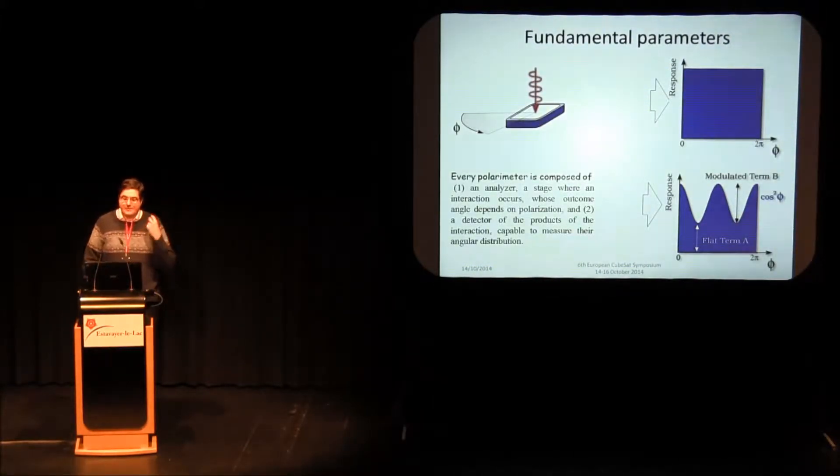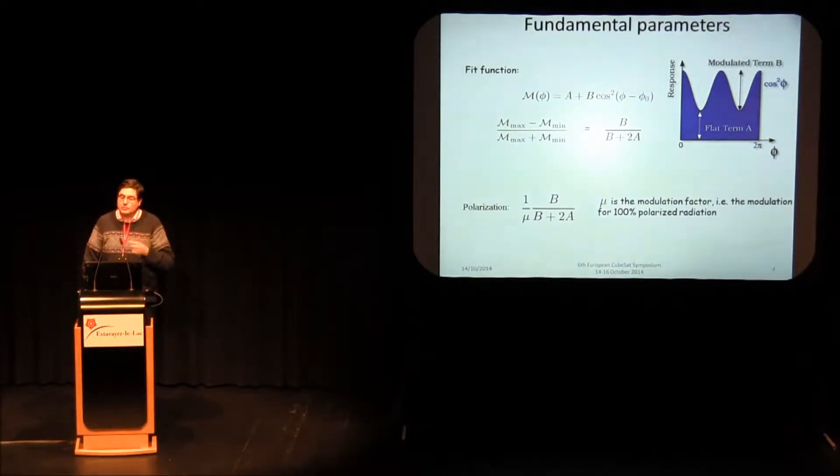X-ray polarimetry consists usually of an analyzer and a detector. If the beam is unpolarized, the response with respect to the characteristic angle is flat. If the beam is polarized, the modulation curve is actually done by a modulated term and a flat term. We usually fit the modulation curve with a cosine-square function and derive the amplitude of modulation. To get the polarization of the beam, we divide the amplitude of the modulation with the modulation factor, that is the amplitude of the modulation of 100% polarized radiation.